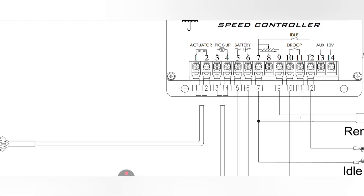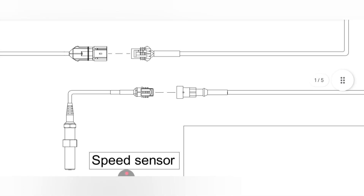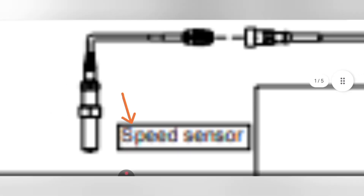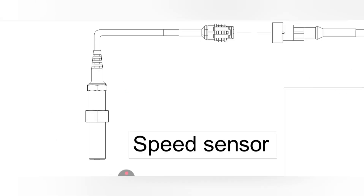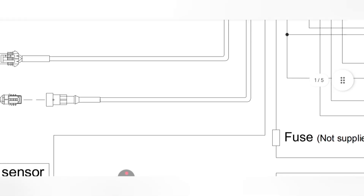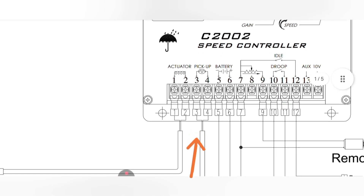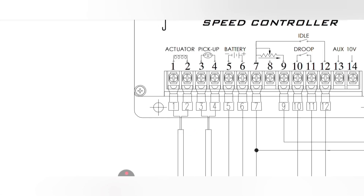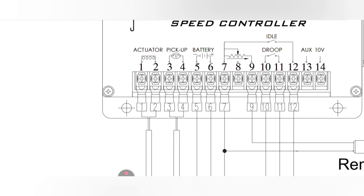After that, pin number three and four are for the pickup — also called the MPU or RPM sensor. The MPU is a small AC generator that generates pulse width modulation signals. It generates a small amount of AC current as input to the speed controller, ranging from 3 volts to 36 volts AC.